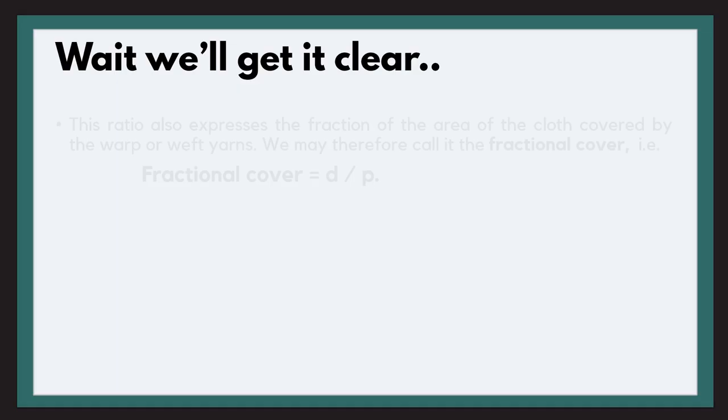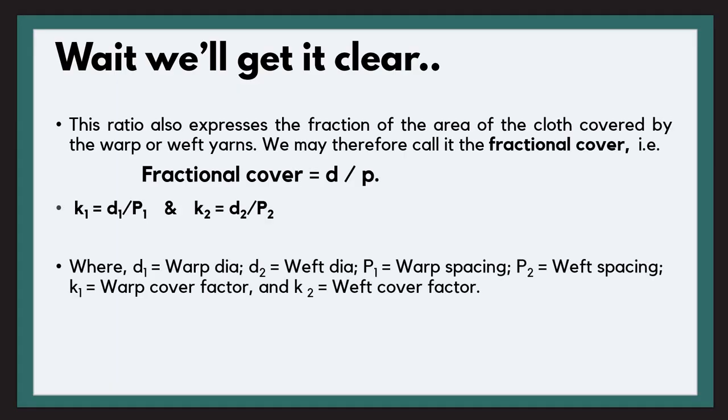Now moving further, this D upon P is actually the fractional cover. We will denote this by small k, where K1 equals D1 upon P1 and K2 equals D2 upon P2 depending upon the warp and the weft. We have taken D1 as the warp diameter, D2 as the weft diameter, P1 as warp spacing, P2 as weft spacing. Hence K1 will be the warp cover factor and K2 will be the weft cover factor.